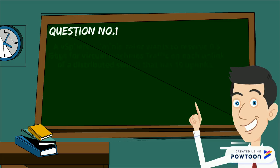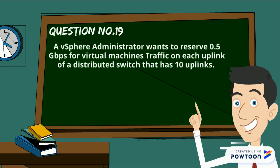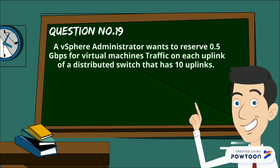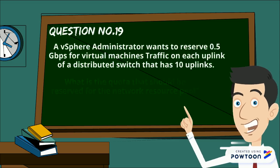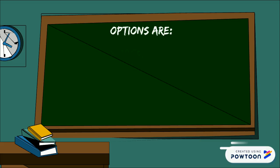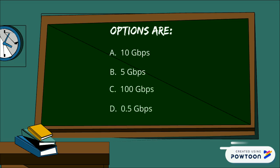So certainly the answer is C and D. Here goes our question number 19: A vSphere administrator wants to reserve 0.5 Gbps network bandwidth for virtual machine traffic on each uplink of a distributed switch that has 10 uplinks. What is the quota that should be reserved for the network resource pool? Options are: A: 10 Gbps, B: 5 Gbps, C: 100 Gbps, D: 0.5 Gbps.